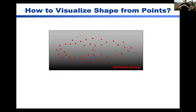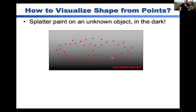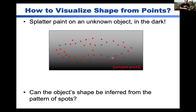I'm going to hold an imaginary object in my hands, but I'm going to turn the lights off so you can't really see what I'm holding. I'll give you some information — I'll splatter some spots of paint on this object in the dark. Based on these spots of paint, can you go back and visually represent what the actual shape of this object is? The question is: can the complete shape of an object be inferred from this pattern of spots?